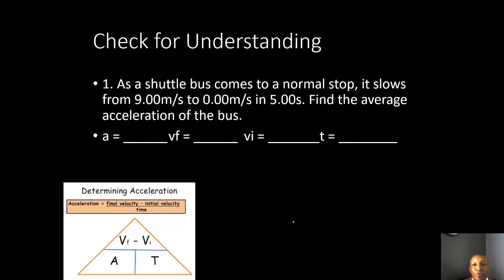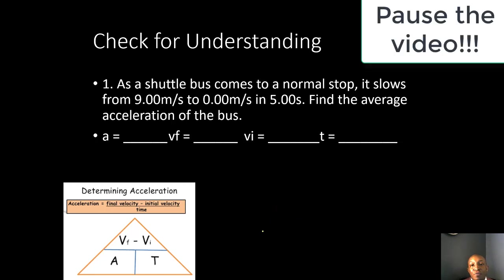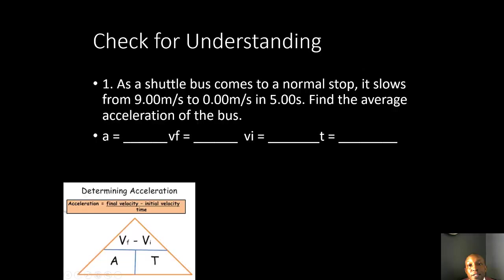Now it's time for our check for understanding. You have one minute to identify the components you need and solve the following acceleration problem — go ahead and pause the video. As a shuttle bus comes to a normal stop, it slows down from nine meters per second to zero meters per second in five seconds. Find the average acceleration of the bus.